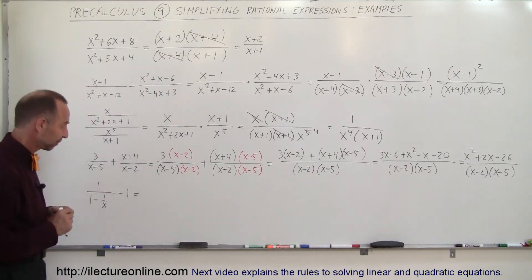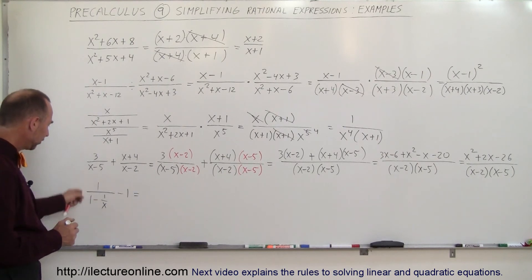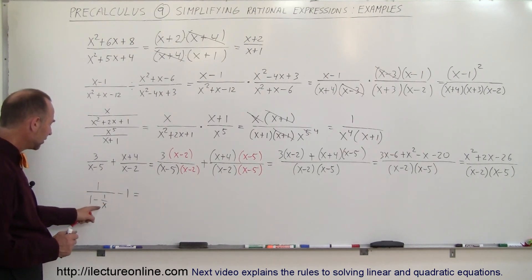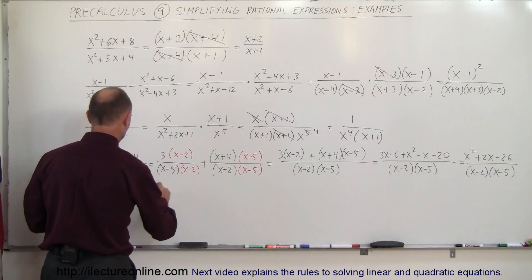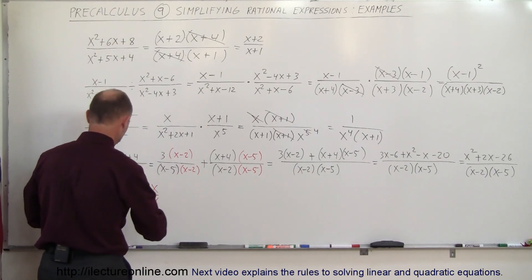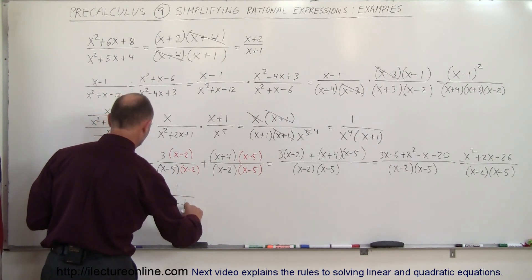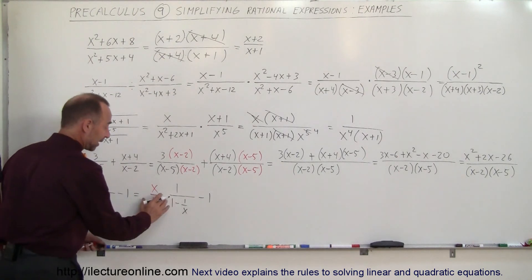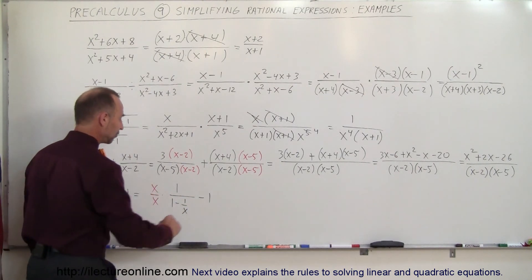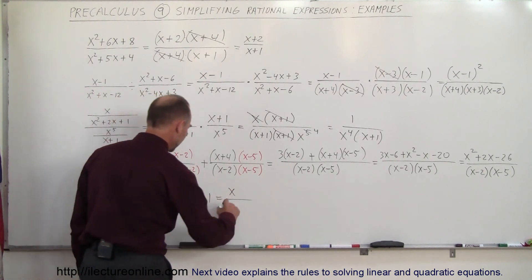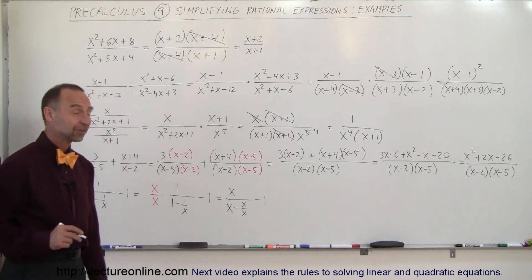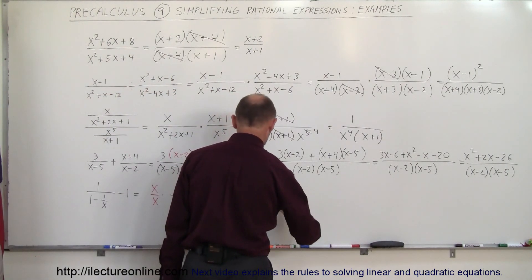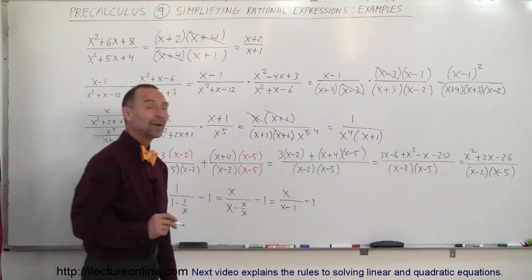Finally, we have something that looks like a complex fraction. The best way to handle this is to notice that the denominator here is x. If I multiply the numerator and denominator by x for this fraction, I can simplify it much better — that's a special technique. So this can be written as x divided by x, times the fraction 1 over 1 minus 1 over x. Multiplying through: x divided by x times 1 is x, and x times minus 1 over x is minus 1, giving x divided by x minus 1 minus 1.